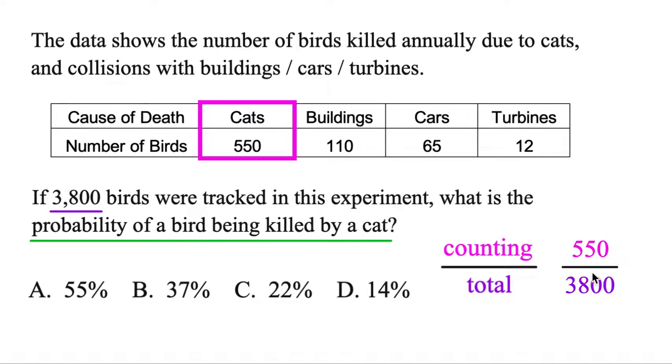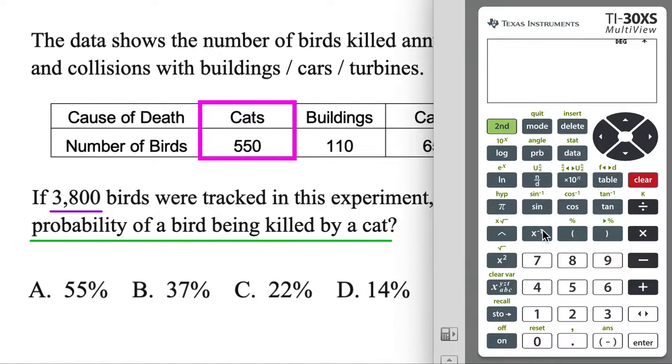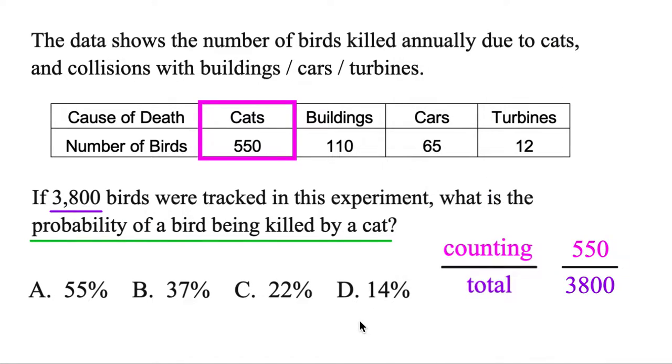Technically, this is a probability, so you could just leave it like that, but we'll plug it into the calculator, turn it into a percent. By the way, this is the calculator that you'll use for the GED. There's the fraction button, and then we'll go ahead and do our 550 divided by 3,800, enter, and then use the button above enter, convert it to a decimal, because now this is the same thing as 14%. So, that's the probability that a bird was killed by a cat. And this is based on real data in the US, so this is a public service announcement on behalf of birds. Keep your cats in check.